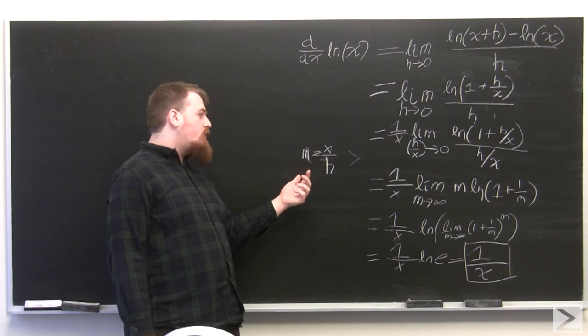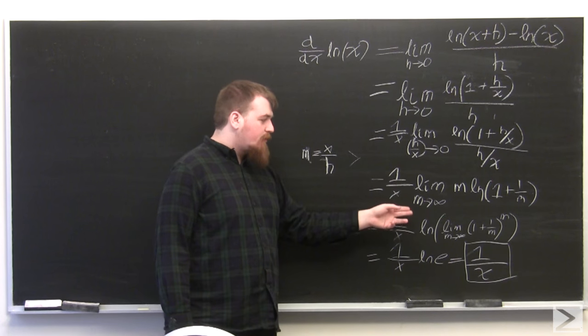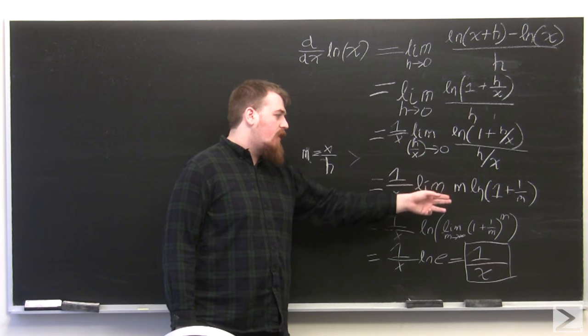Then we let m equal x over h. We get the limit is equal to 1 over x times the limit as m goes to infinity of m times log of 1 plus 1 over m.